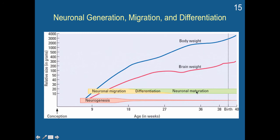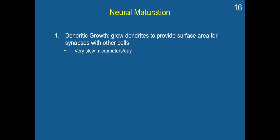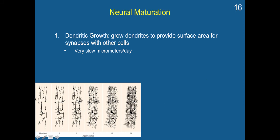Interestingly, at the time of birth you still have neuronal maturation ongoing, but almost no more neurogenesis. Increases in body weight and brain weight continue because as neurons grow and mature, they form more connections, become larger, leading to deeper cortical folds and increased brain weight. Neuronal maturation is characterized primarily by dendritic growth, growing dendrites to provide surface area for synapses with other cells. Comparing a newborn to ages one through twenty-four months, the number of neurons stays relatively constant, but dendritic growth and inter-neuronal connections expand dramatically.